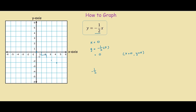So when we connect the dots, this is what our line will look like. And on the other side as well — this is your line, y equals negative half x.